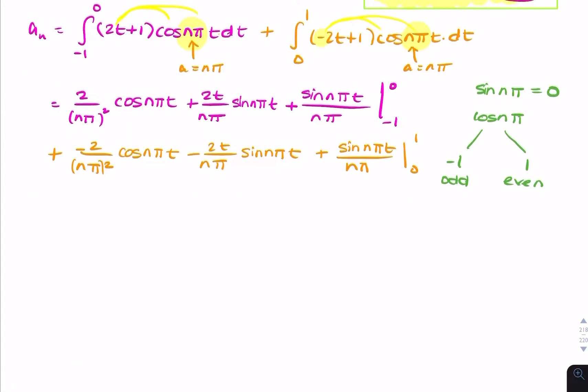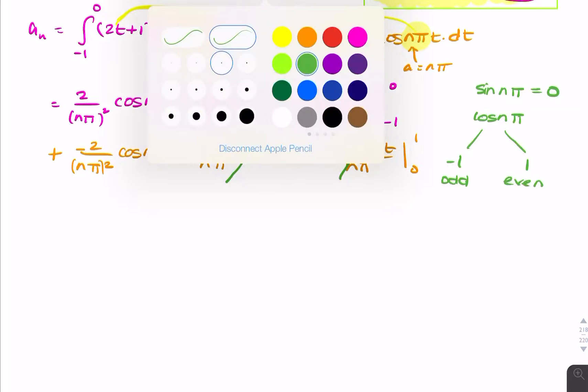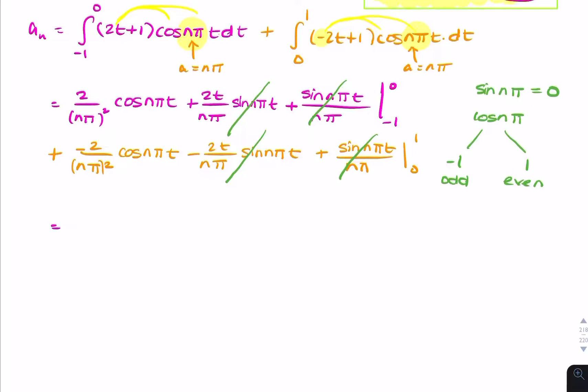So if we now simplify the fractions, all the sines will be 0, and the cosines will be either 1 or minus 1, so they actually add up. So it's 2 over n pi squared, minus minus, plus 2 over n pi squared, minus minus, plus 2 over n pi squared, and finally minus minus, minus, plus 2 over n pi squared.